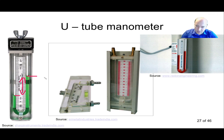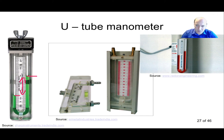This U-tube instrument is good for relatively small pressure differences; otherwise you would need a very large instrument — several meters tall — which is impractical. These instruments are still used for basic measurements. They have no electrical output but are reliable and fairly accurate.